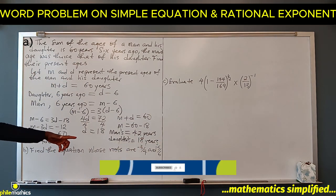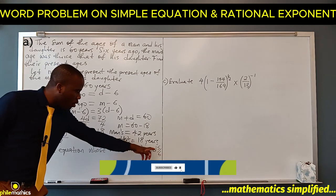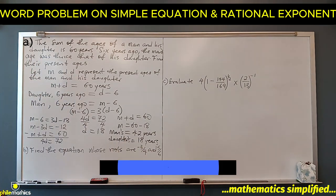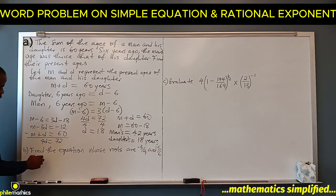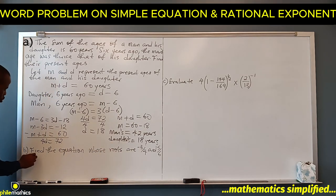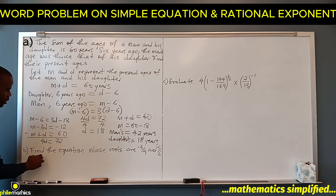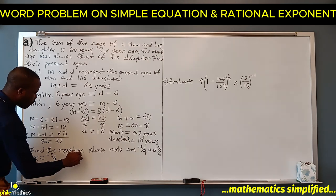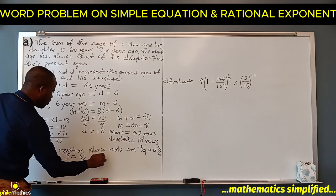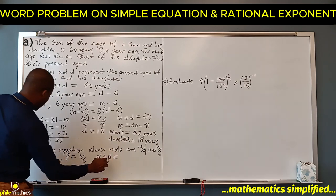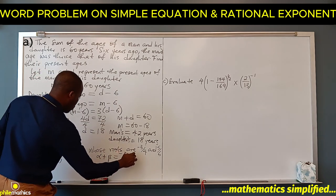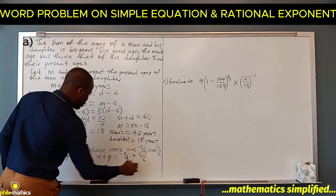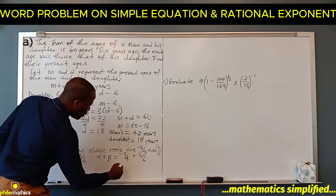Find the equation whose roots are minus 3 over 4 and 5 over 6. We're going to use alpha and beta to represent the roots, so alpha is minus 3 over 4 and beta is 5 over 6.